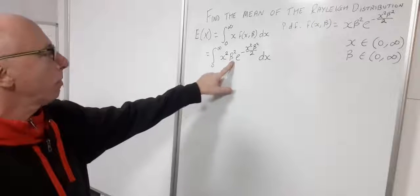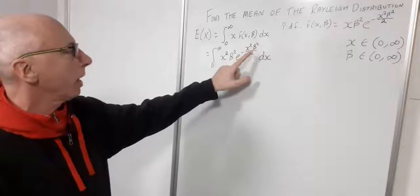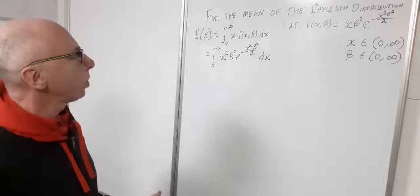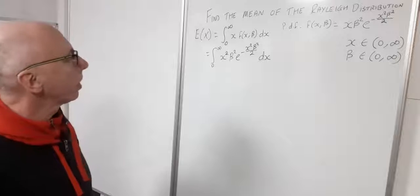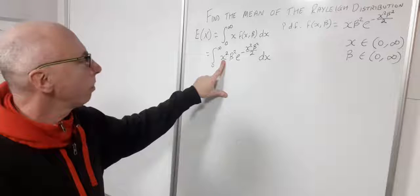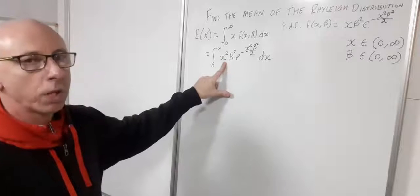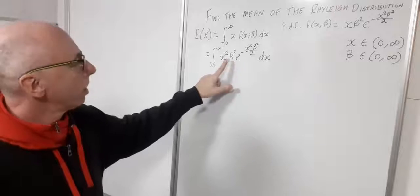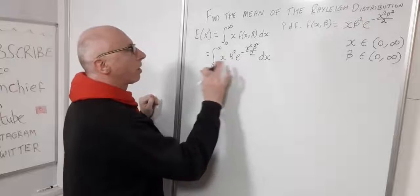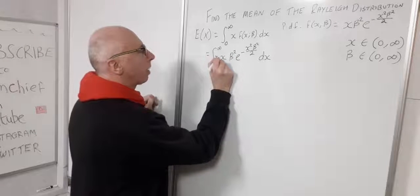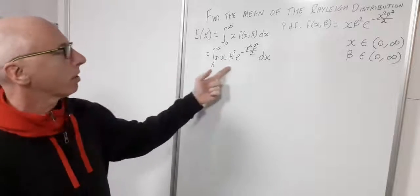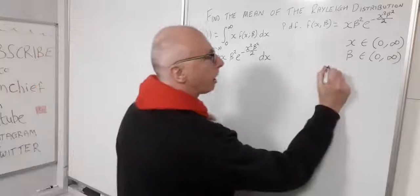We have x squared beta squared in the polynomial part and x squared beta squared in the exponent, but the exponent is divided by 2. A u substitution from the beginning is not going to work, so we split the x squared apart. When we found the CDF in a previous video, we could integrate x times beta squared, so we're going to break x squared into x times x and then use integration by parts.